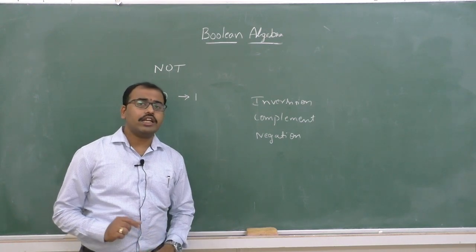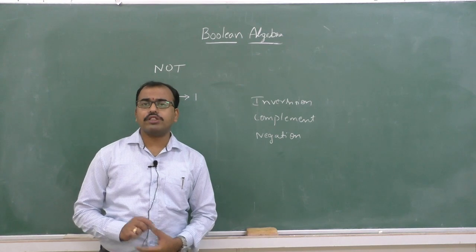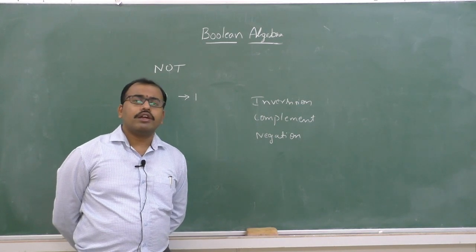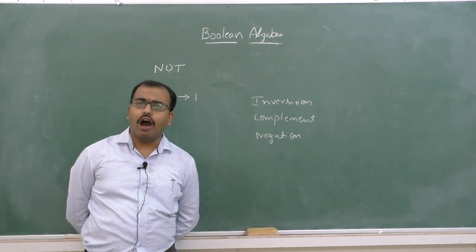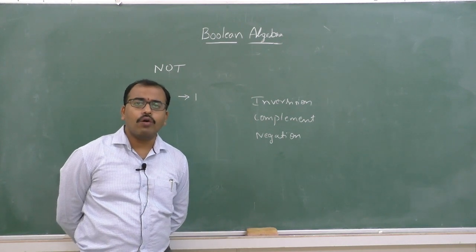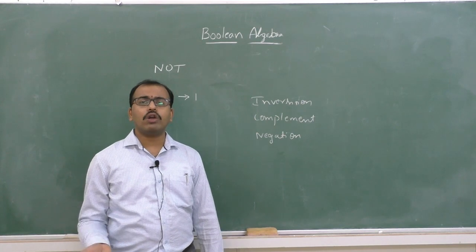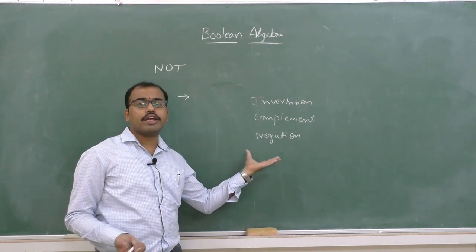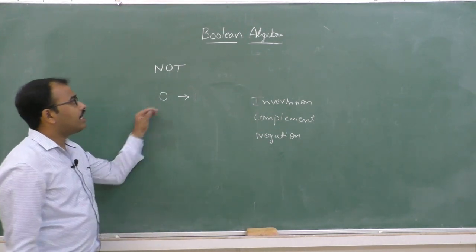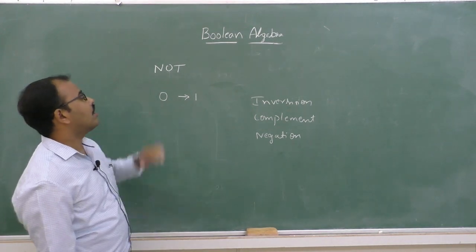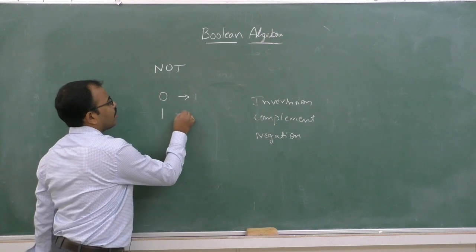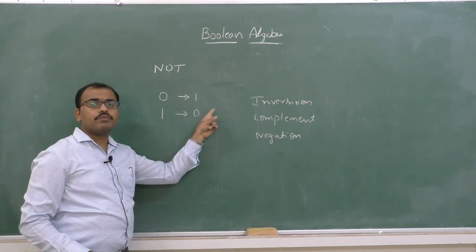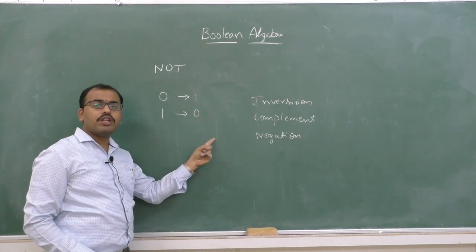In the previous year during binary addition and subtraction, we studied the one's complement method. In one's complement, all 0s are converted to 1 and all 1s are converted to 0. That is what complement, inversion, or negation means. NOT is a logical operator — it gives the inverse or complement of the input. If input is 0, output is 1; if input is 1, then output is 0.